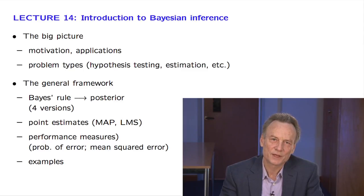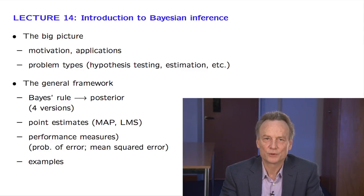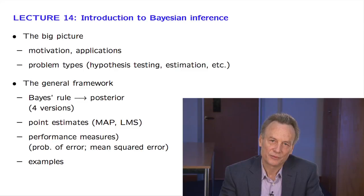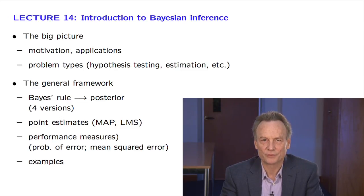We then move into the specifics of Bayesian inference. The central idea is that we always use the Bayes' rule to find the posterior distribution of an unknown random variable based on observations of a related random variable. Depending on whether the random variables are discrete or continuous, we must of course use the appropriate version of the Bayes' rule.